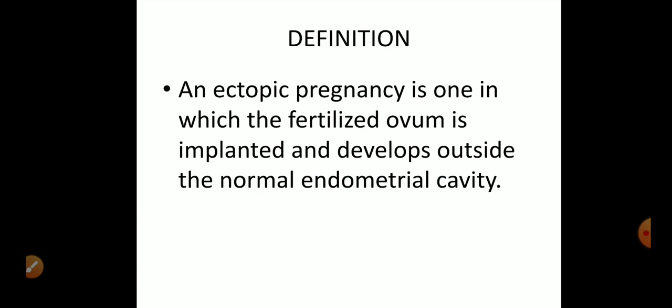Ectopic pregnancy is one in which the fertilized ovum is implanted and develops outside the normal endometrial cavity. In a normal pregnancy, fertilization occurs in the fallopian tube and the ovum is implanted in the endometrial cavity of the uterus. But in ectopic pregnancy, implantation occurs at another location.